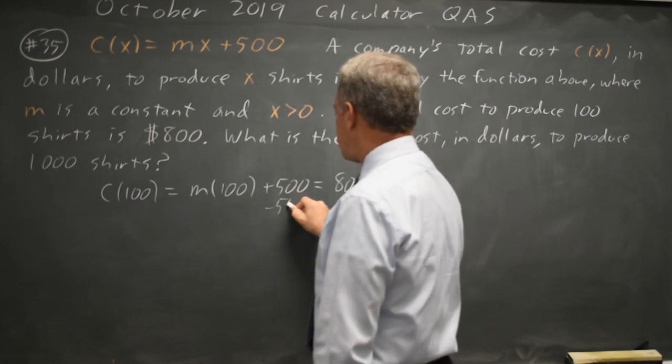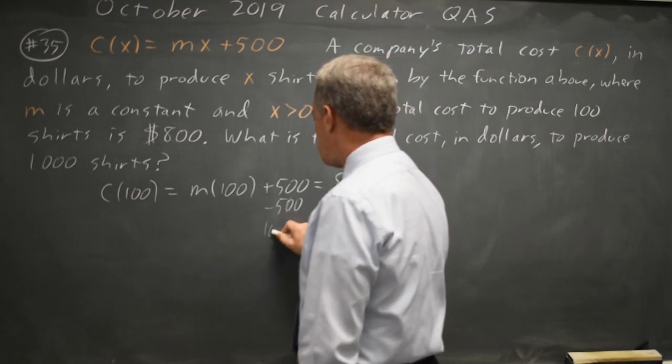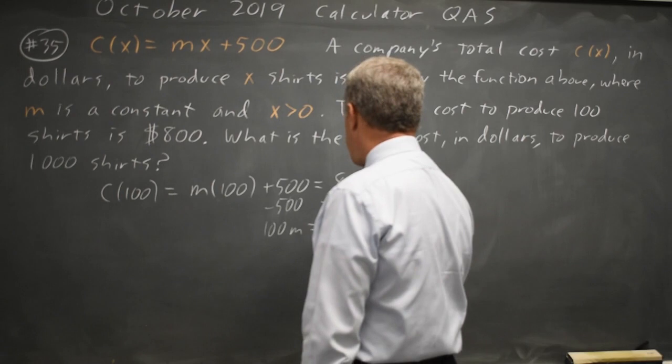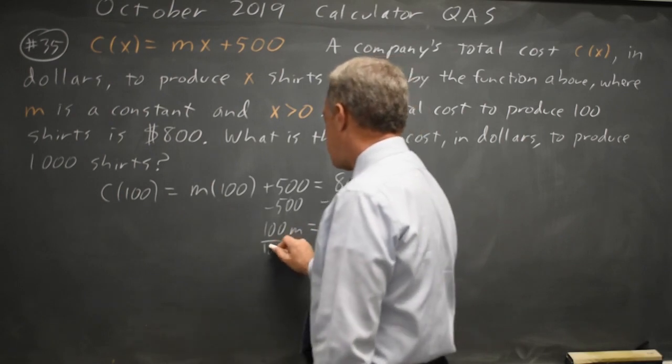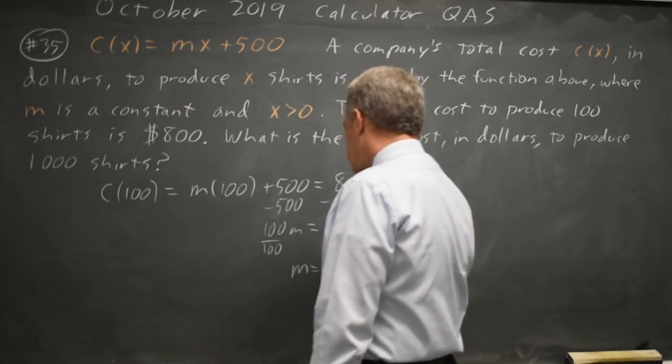Minus 500 from both sides gives us 100m on the left. 100 times m equals 300. Divide by 100. m equals 3.